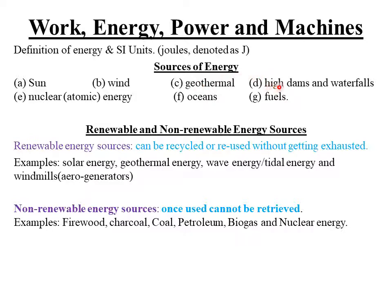The fourth source of energy is high dams and waterfalls, whereby water in high dams contains potential energy — that is energy at rest. As the water flows from the dams, the potential energy is converted into kinetic energy, that is energy in motion, which is used to turn the turbines in hydraulic power stations to produce electricity by the same process of electromagnetic induction.